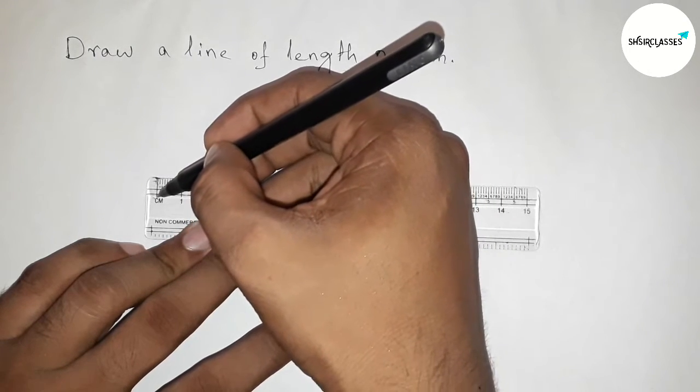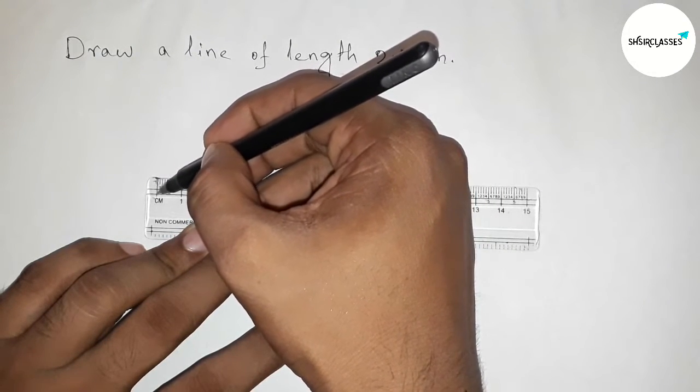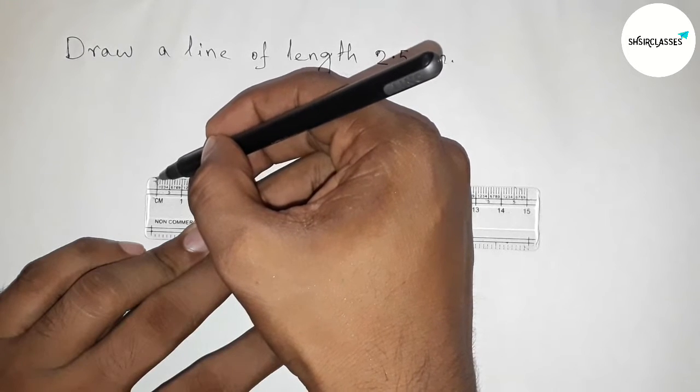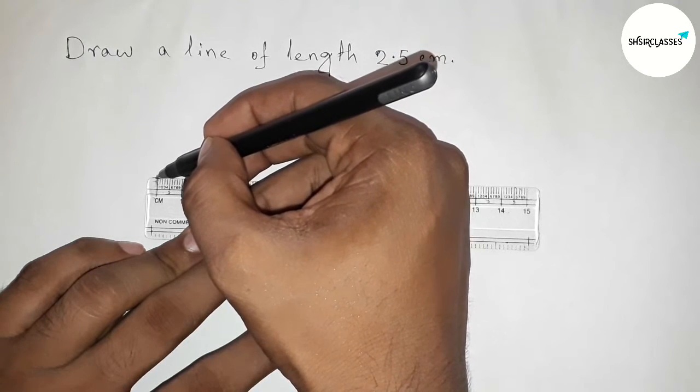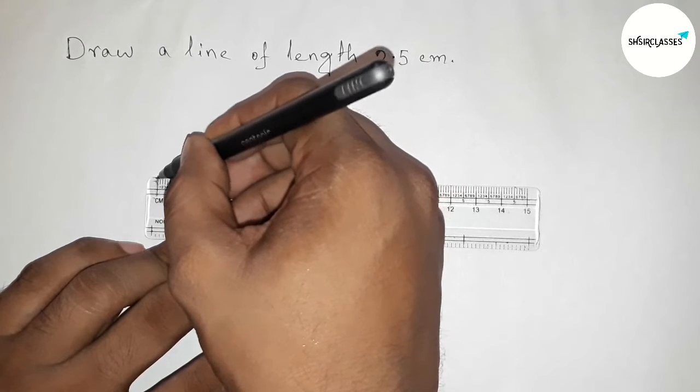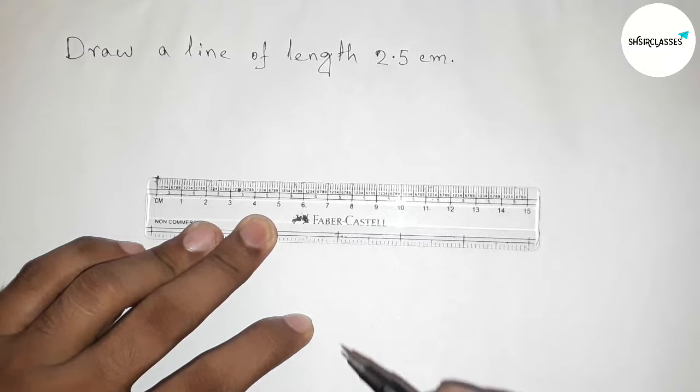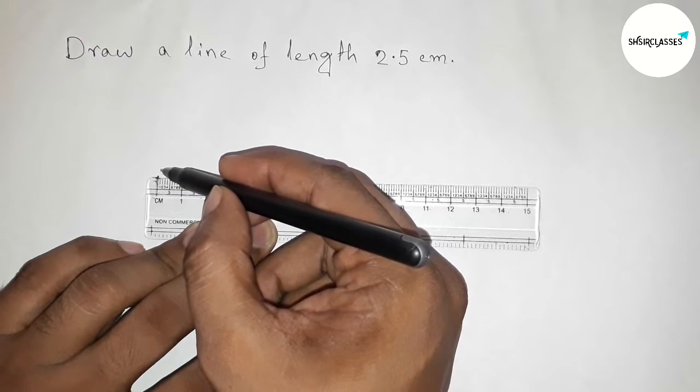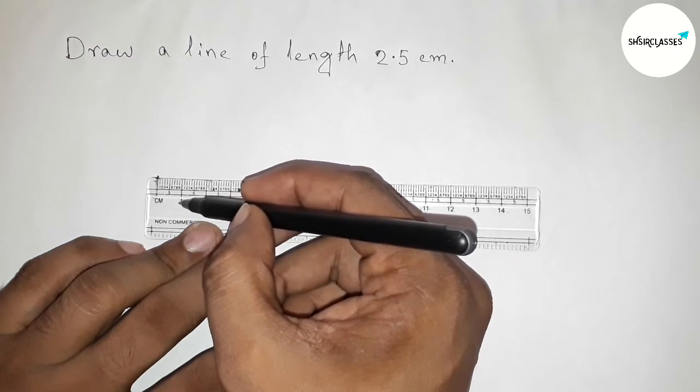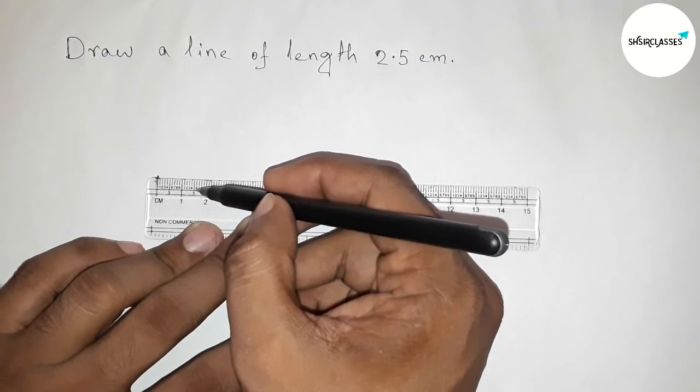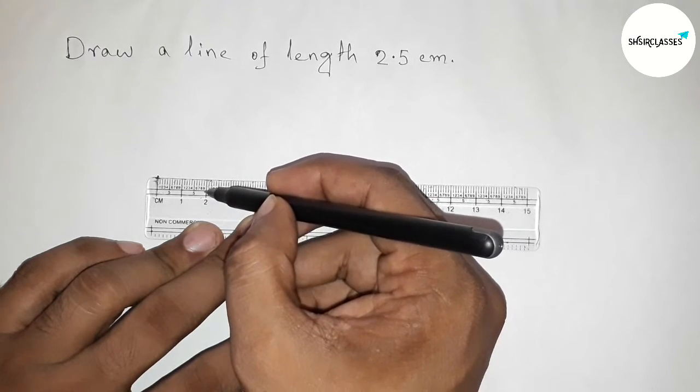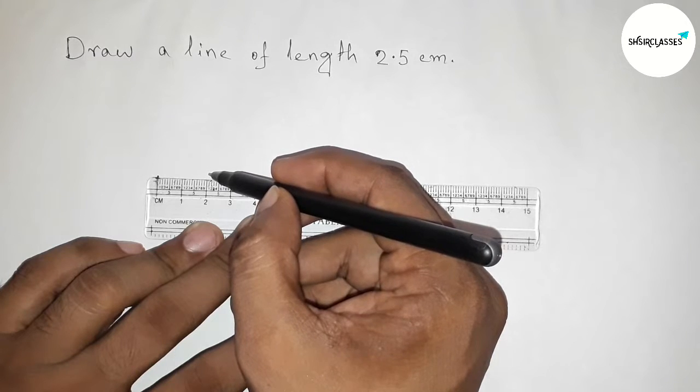Now counting the length. So this is the starting zero, so this is starting zero, so first marking this. Next counting the length 2.5 centimeter. So this is zero, this one, one centimeter, and this is two centimeter, and this is 2.1, 2, 3, 4, 5.